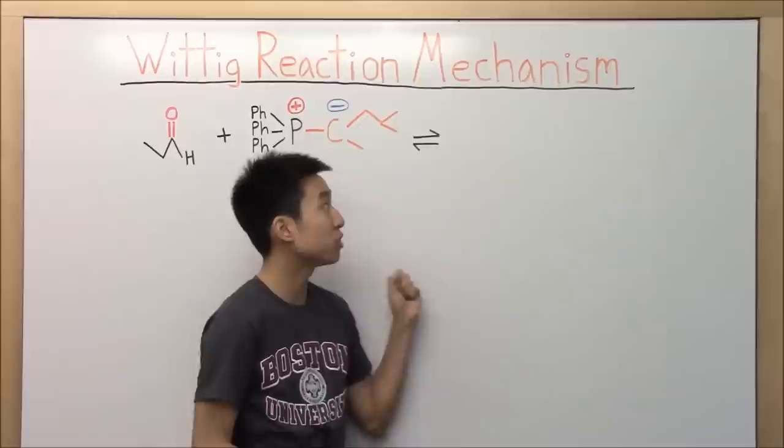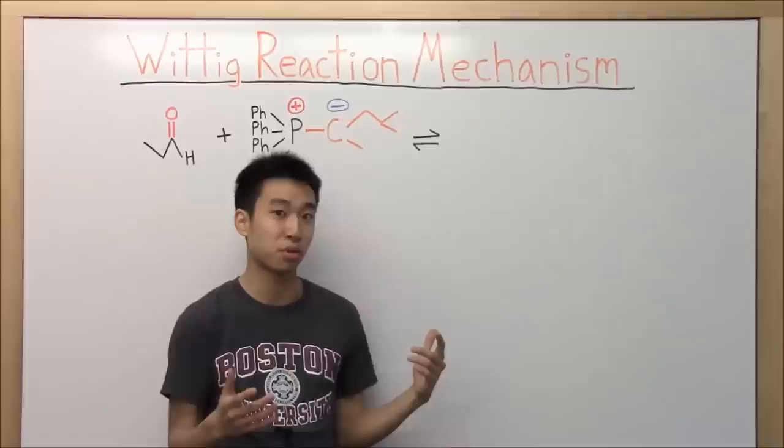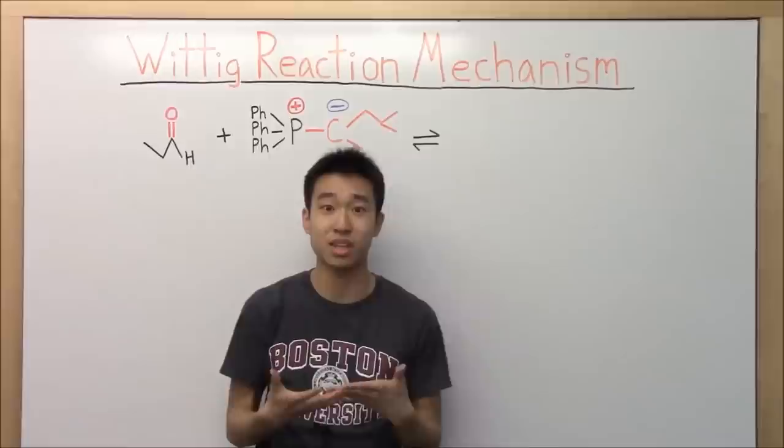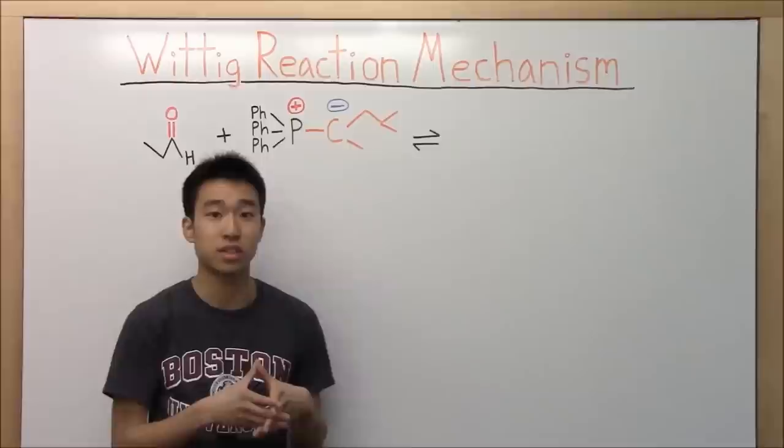So tip number one for you guys: Be really good at doing the product prediction for whatever reaction you're going to have to do the mechanism for. The reason why I say this is because if you don't know what the products of the reaction are going to be, you have no idea what you're aiming for when you're doing the mechanism, and it's really easy to make mistakes.